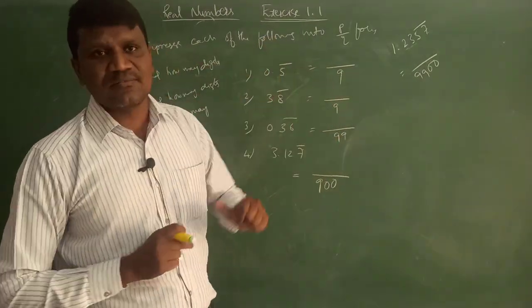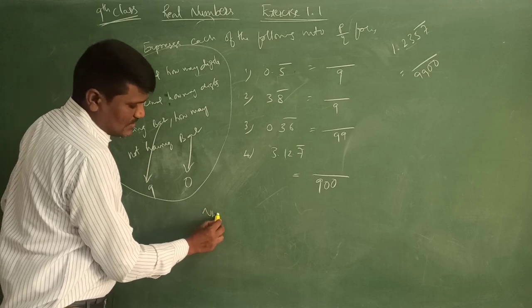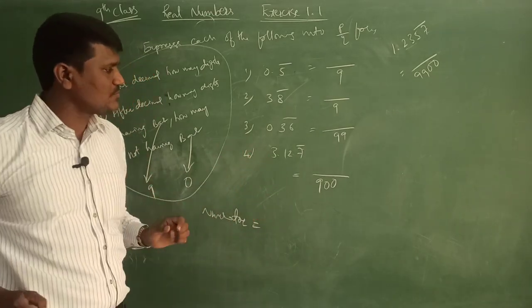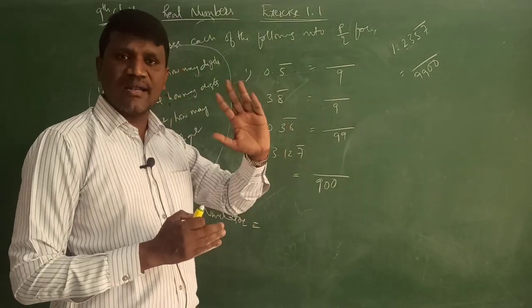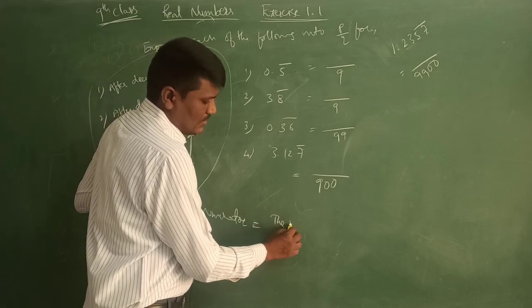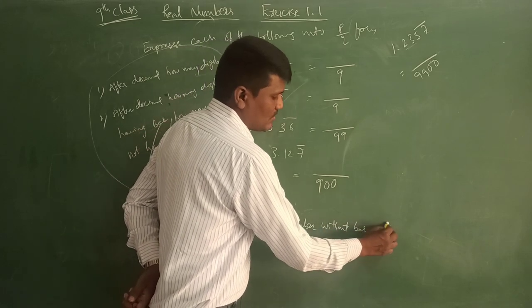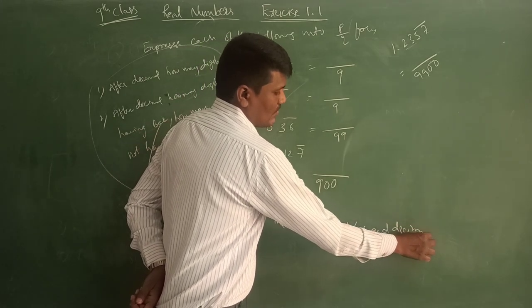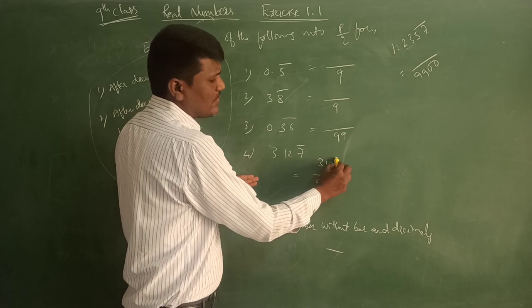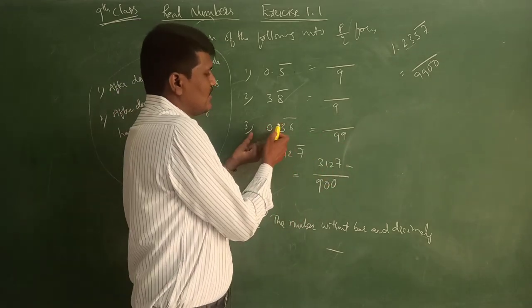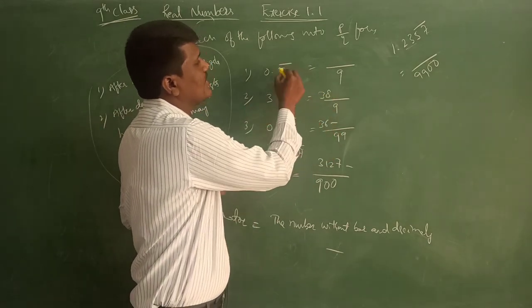Coming to the numerator, right? Coming to the numerator. Numerator will be - the number you should take without bar and without decimals. For 3.127, we'll take the number without bar and decimals. Here 36, here 38, here 5.